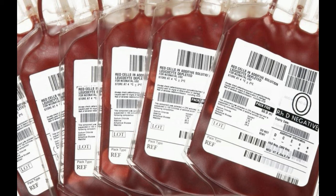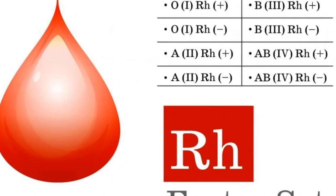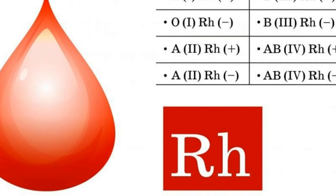Red blood cells in humans differ from those of many animals in that they do not have nuclei. Most animals besides mammals have nuclei in their mature red blood cells. Mature mammalian red blood cells lose their nuclei and organelles in order to carry more hemoglobin and do not need to use any oxygen themselves. Erythrocytes are round in all mammals except camels, who have oval erythrocytes.